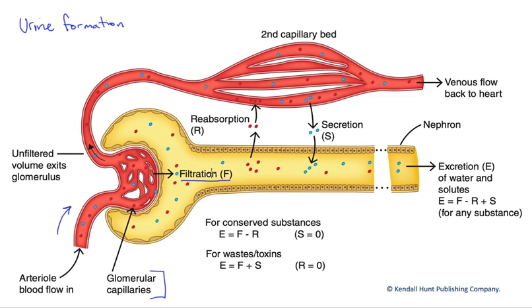This filtration is massive — about 20% of the plasma passes through here. And because of the enormous blood flow to the kidneys, that means we filter, in all of the nephrons combined, your entire plasma volume about every 20 minutes. If we were to actually excrete all of that, we would run out of plasma in 20 minutes — it would kill you. So one of the things that has to happen is we're going to have to save most of what we filtered into this nephron.